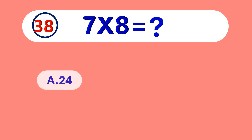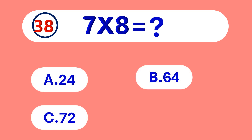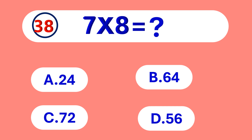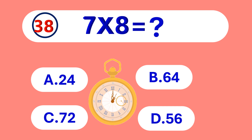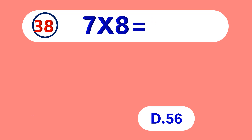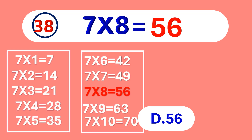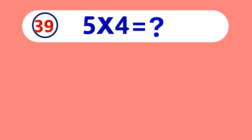7 times 8 is equal to 56. 7 times 8 is 56. 5 times 4 is equal to 20.